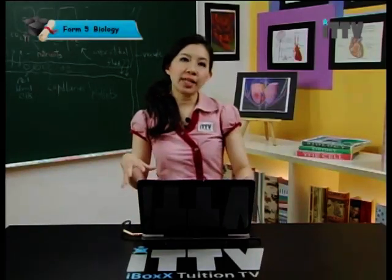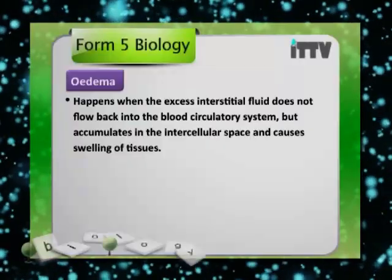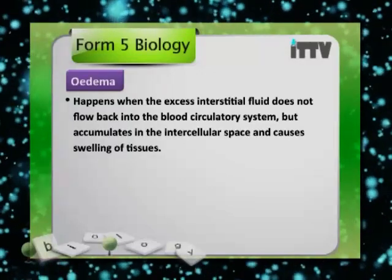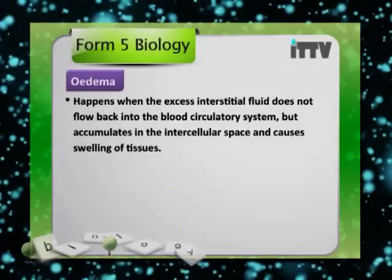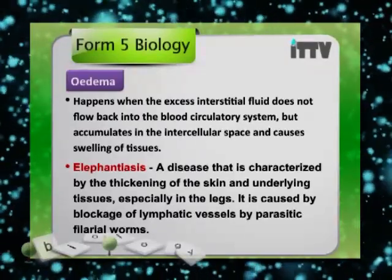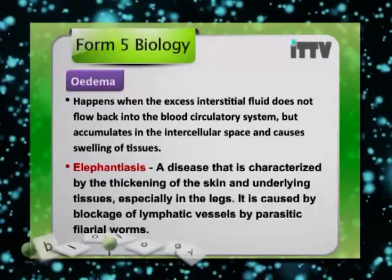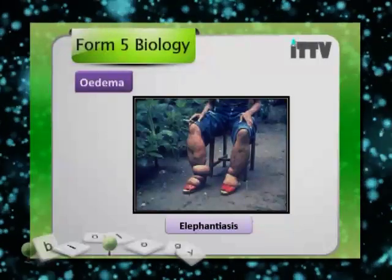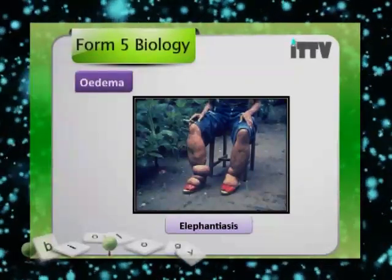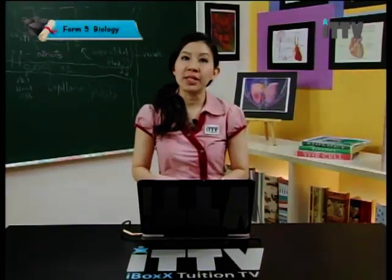Let's look at oedema. Oedema is a condition which happens when the excess of interstitial fluid does not flow back into the blood circulatory system, but accumulates in the intercellular space and causes swelling of tissues. Elephantiasis is a disease characterized by the thickening of the skin and underlying tissues, especially in the legs and male genitals. It is caused by blockage of lymphatic vessels by parasitic filarial worms. As you can see in the diagram, this person's legs are swollen and the skin is thickened because of elephantiasis.